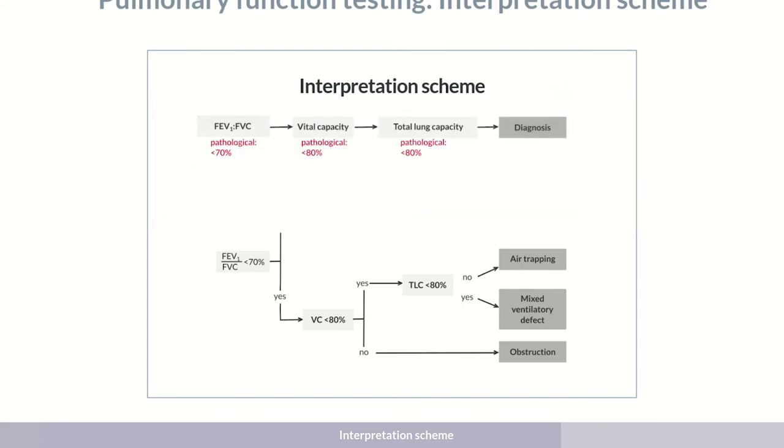Let's take a look at the types of disorders present when the FEV1 to FVC ratio is within the normal range. If the vital capacity is also normal, the finding is physiological.